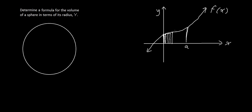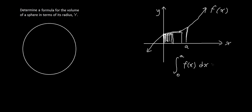Now, if you make the rectangles thinner and thinner and put more of them in, you'll get a more accurate area, because if they're really thick you won't be very accurate — look at all the space we're missing. A function that gives us the exact area is the integral. The integral is basically taking infinitely small rectangles — infinitely many of them. So taking the integral of f of x from x equals 0 to a with respect to x gives you the area from 0 to a.